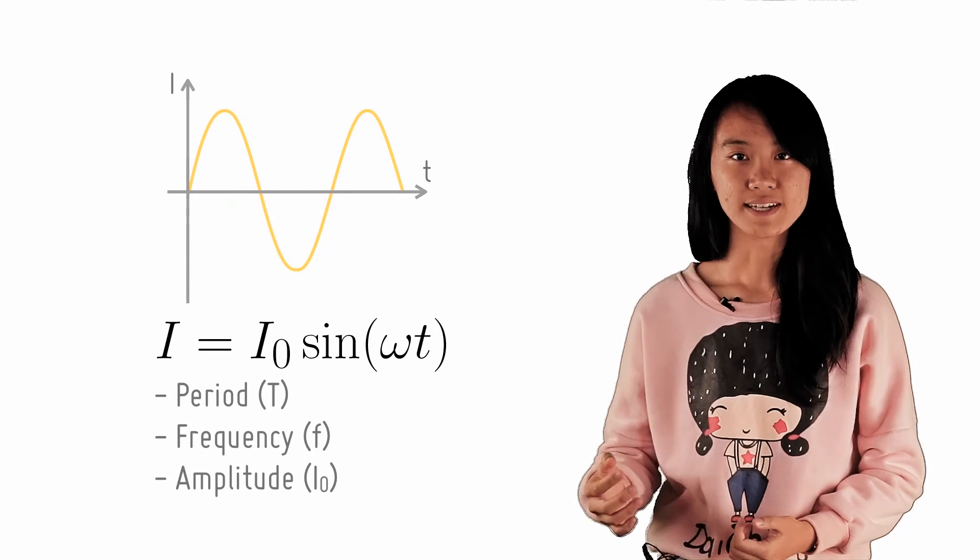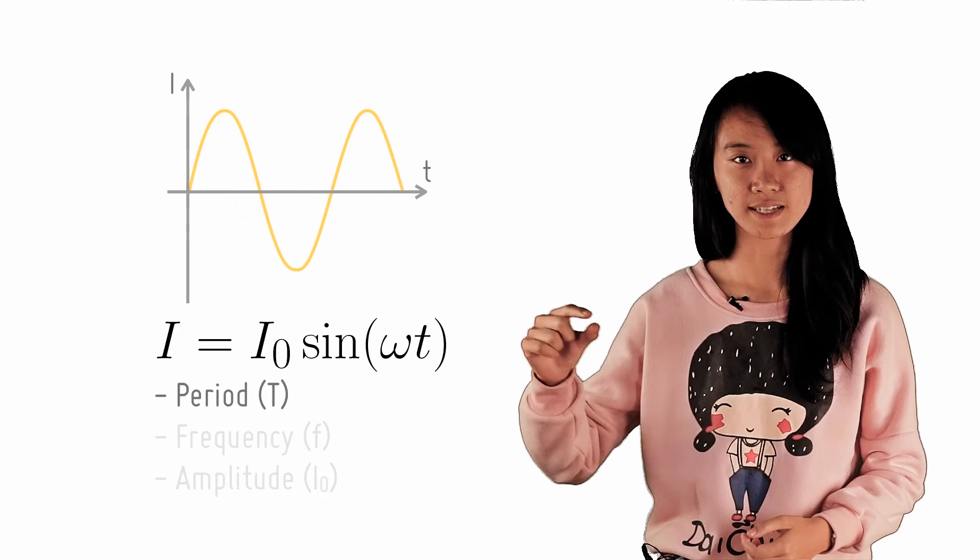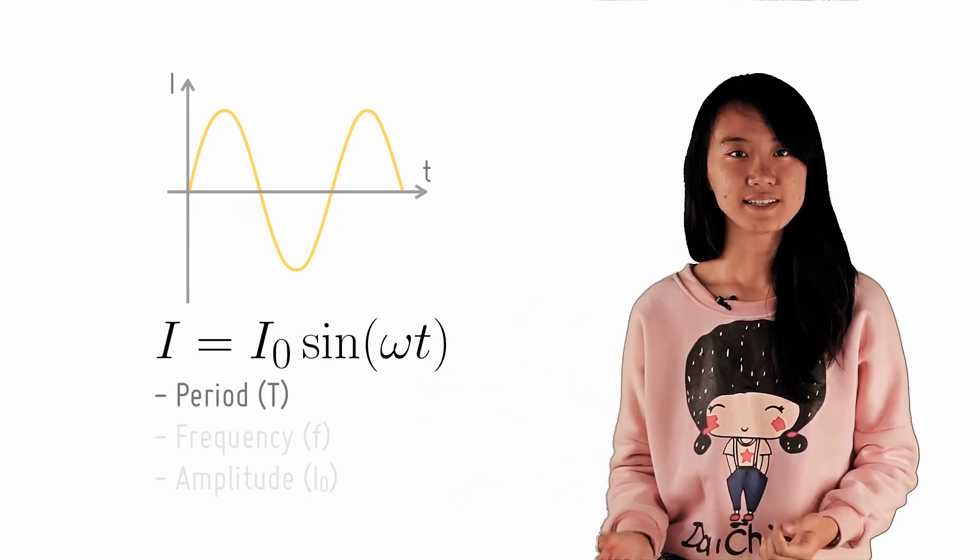First, period. This is the time taken for one complete cycle from one point of the wave to the next point of the same wave. How do we find this?